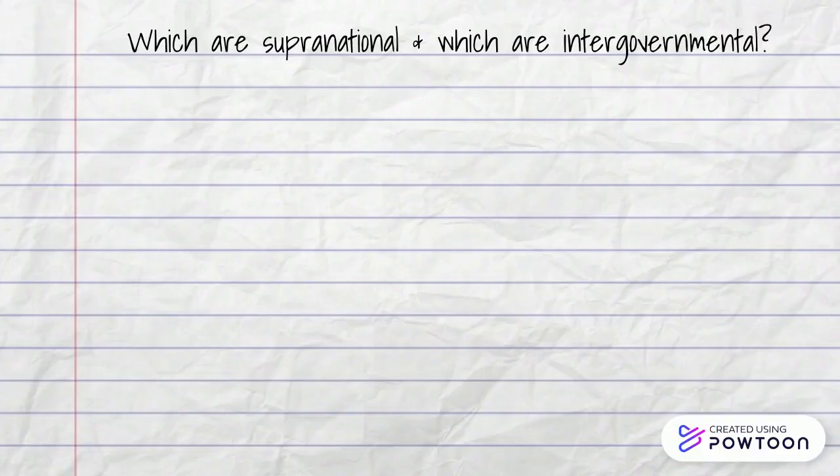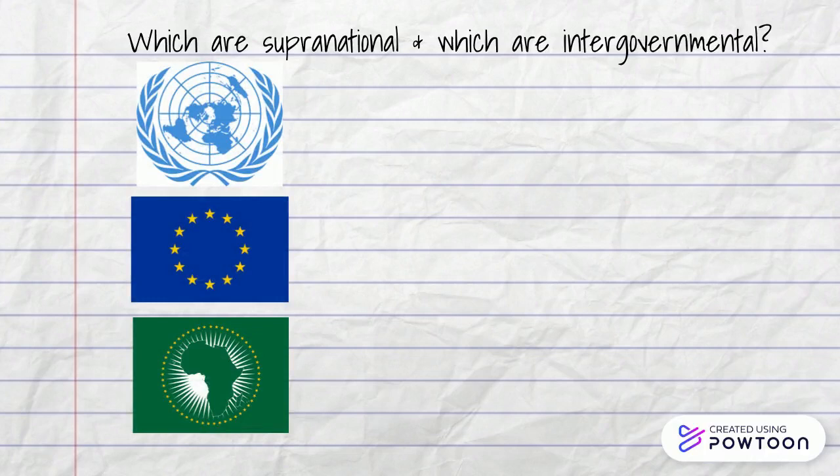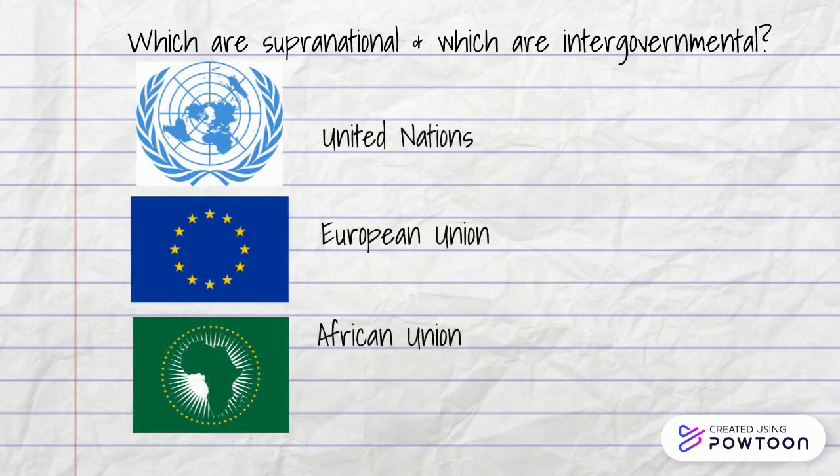Now it's your turn to see if you can determine what type these well-known IGOs are by applying the criteria you just learned. Is it intergovernmental — can states refuse to comply? Or does the organization hold supranational authority over its member states, enabling it to enforce decisions made?